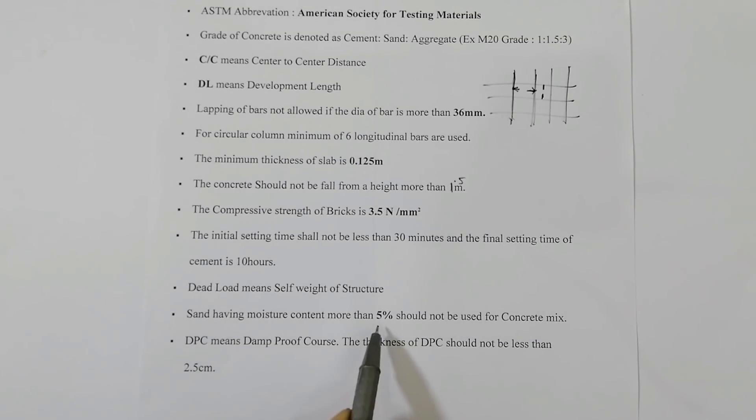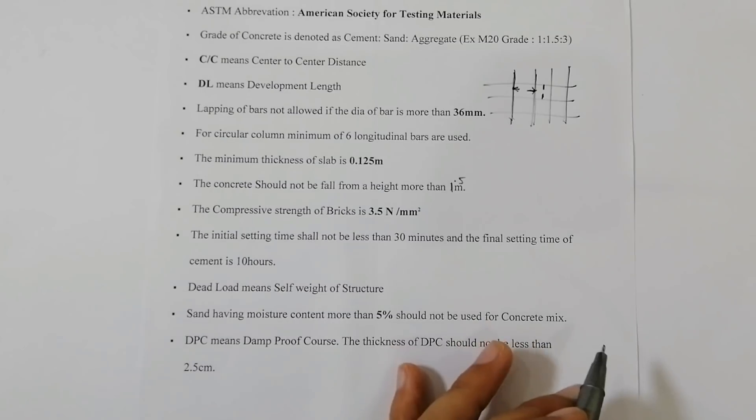The other one is DPC. DPC is the acronym or abbreviation of Damp Proof Course, and its thickness should not be less than 2.5 centimeters or one inch.